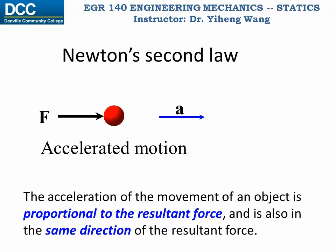In Newton's second law, it is stated that if there is an unbalanced force acting on an object, it will cause accelerated motion. As a result, the acceleration of the object will be proportional to the resultant force, and this is summarized in the equation F equals MA, where M represents the mass of the object, A is acceleration, and F is the force.